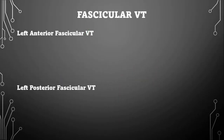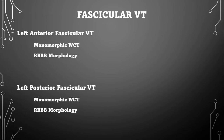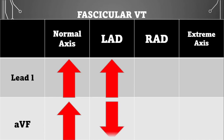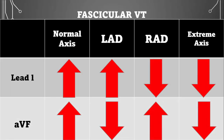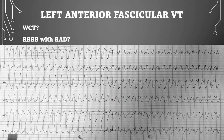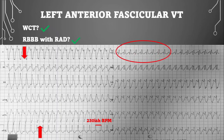Now let's talk about fascicular VTACs. These originate in the two fascicles attached to the left bundle branch and are both monomorphic wide complex tachycardias with a right bundle branch morphology. However, left anterior fascicular VTAC has a right axis deviation, and left posterior fascicular VTAC has a left axis deviation. Here's a review of axis. For left anterior fascicular VTAC: is this a regular wide complex tachycardia? Yes, with a rate around 230 bpm. Do we have a right bundle branch morphology with right axis deviation? Yes — RSR' in V1, lead 1 is down, AVF is up, thumbs pointing toward each other: right axis deviation.